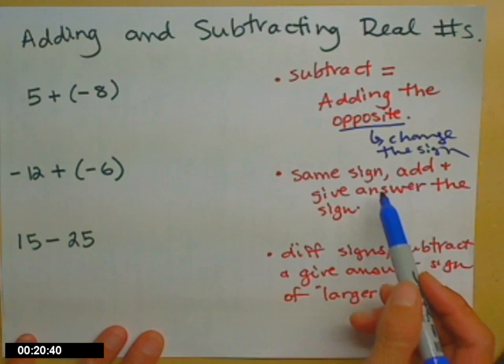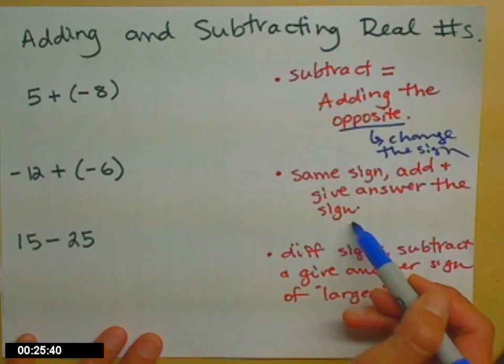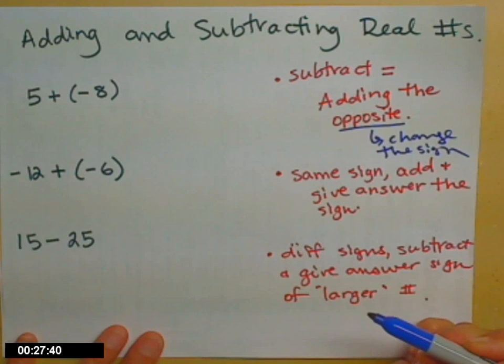If you have two numbers and they have the same sign, what you do is you add their absolute values, and then you give the answer the sign that the two original numbers had. If you start with two numbers that have different signs, what you do is take the absolute value, subtract smallest from largest, and then your answer gets the sign of the larger number. It's the one that gets to win.